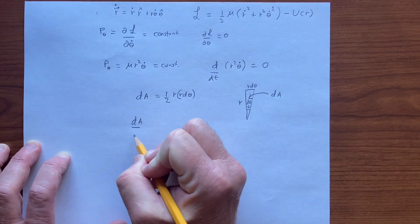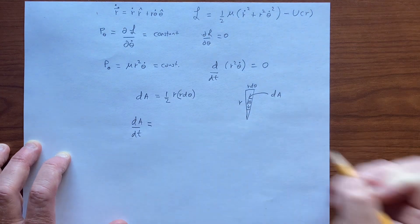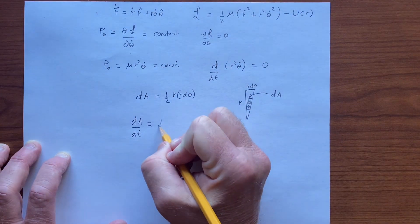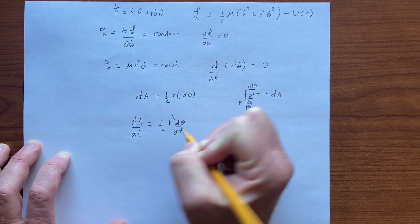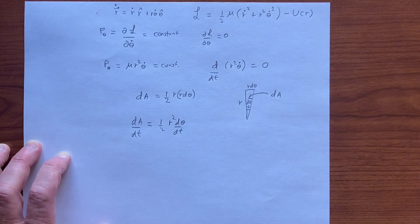So we have dA, the rate of change dA dt of that area is one-half r squared d theta by dt, which is the constant that we're looking at here.